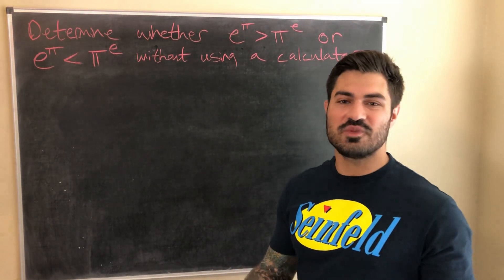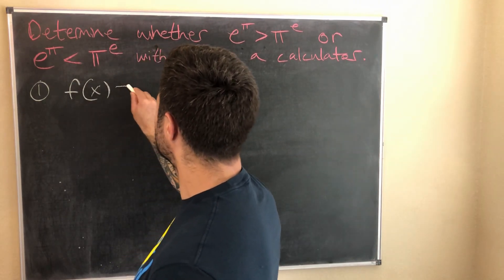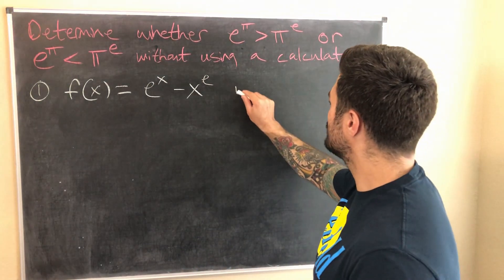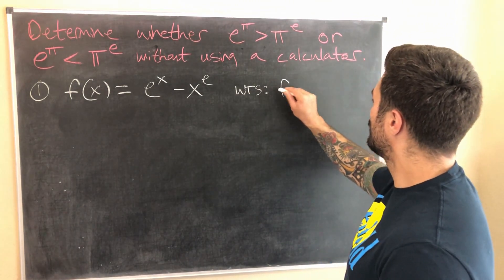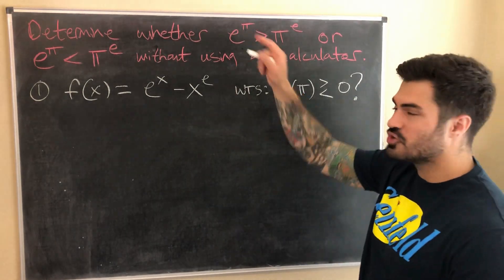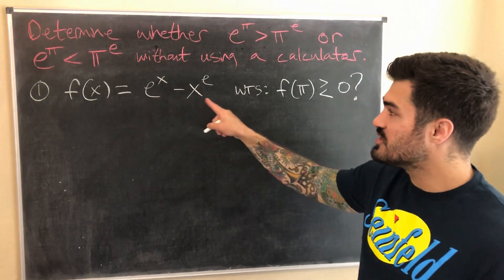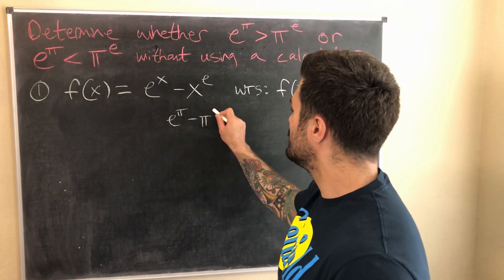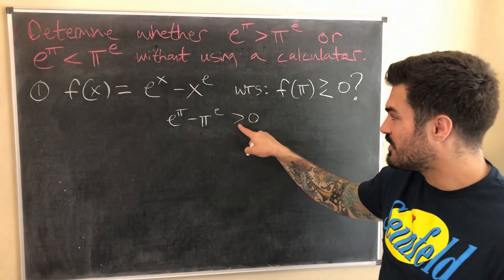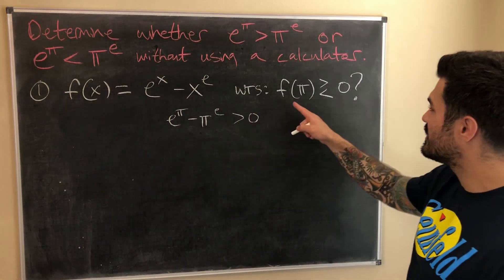The first function we can define is f(x) = e^x − x^e. What we want to do is look at f(π) and determine whether it's greater than or less than zero. Why does this answer our initial question? Because f(π) = e^π − π^e. If that's greater than zero, then e^π is greater than π^e; if it's less than zero, we conclude the opposite. So we take this function, analyze it, find critical points, and determine the sign of f(π).